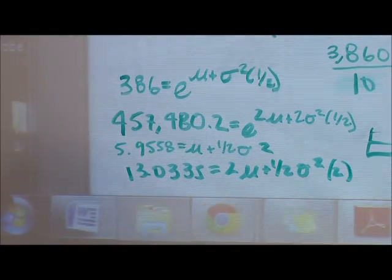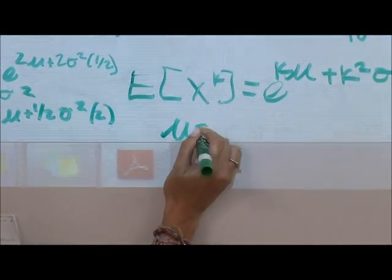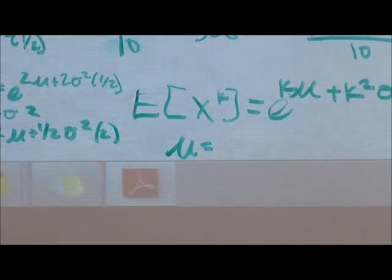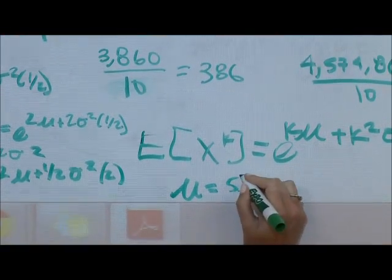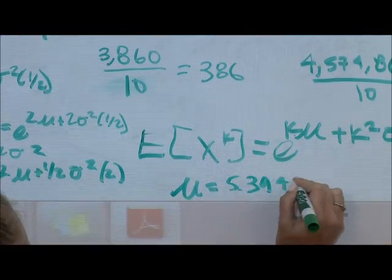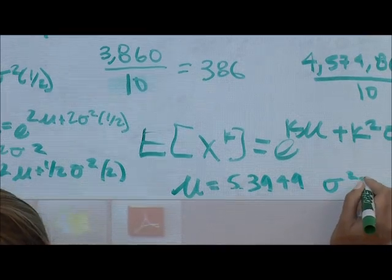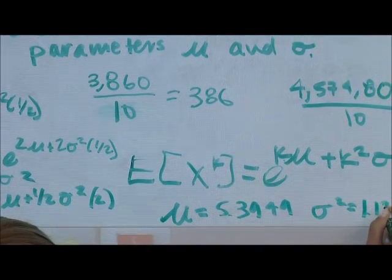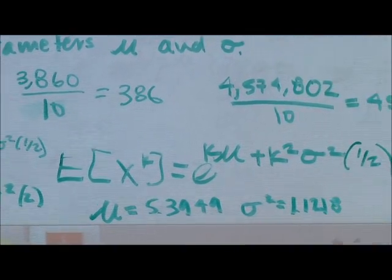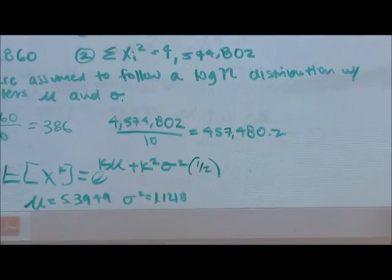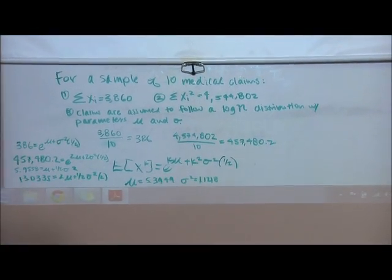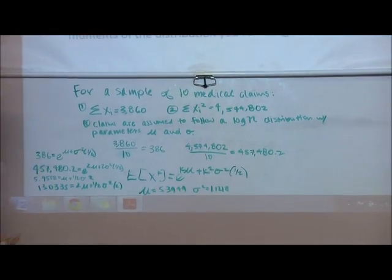Then you can just solve to get mu equals 5.3949 and sigma squared equals 1.1218. Now that you've found the two parameters, you can use them to plug into any equations in the tables to find whatever you might need.